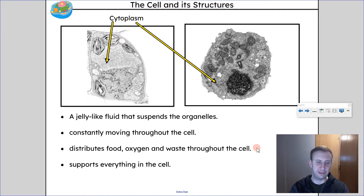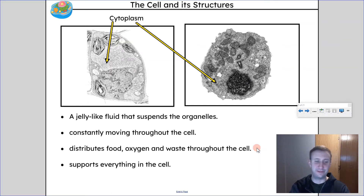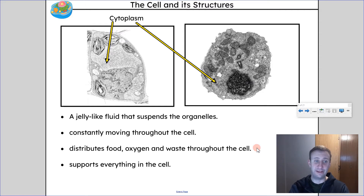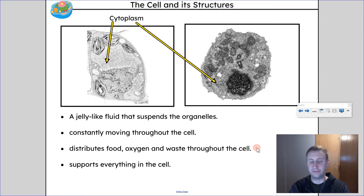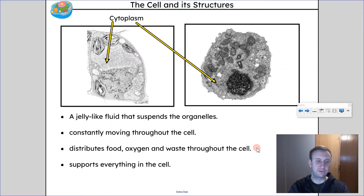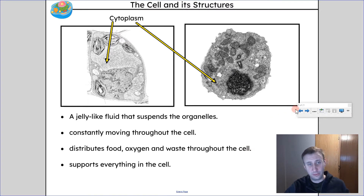Cytoplasm is a jelly-like fluid that suspends the organelles. It's constantly moving throughout the cell, and that allows things like food, oxygen, and waste to move to where they need to go inside the cell. If a cell takes in nutrients from its membrane, they move through the cytoplasm to where they need to go. In the same way, waste moves through the cytoplasm to the membrane so it can leave the cell. It just supports everything and acts as a medium for stuff to move through.